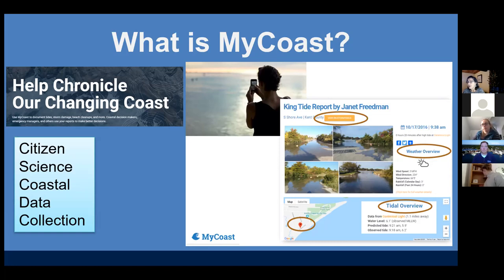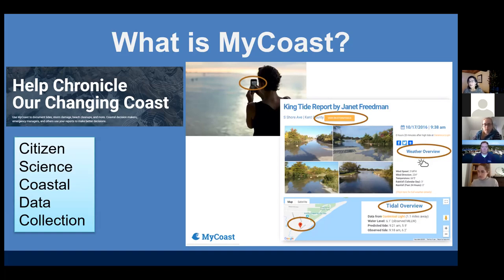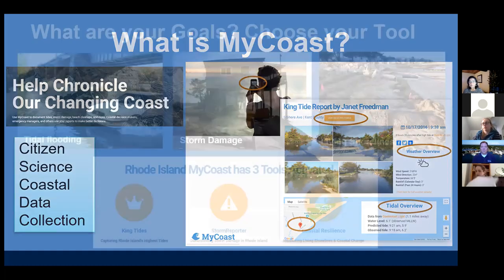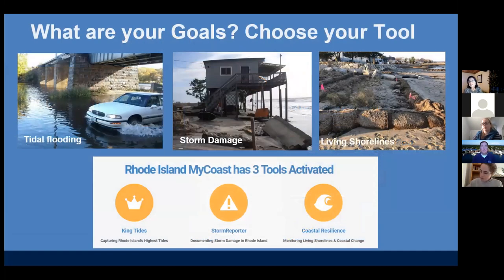In our case we have a very high resolution mapping on sea level rise and storm surge, so you could actually click right there on the app and see a picture of what sea level rise would look like in that spot. It's also a mobile app and can be used if somebody wants to upload a picture. You really need to decide what your goals are and then you can choose a tool — is it about looking at high tides, is it about storm damage?